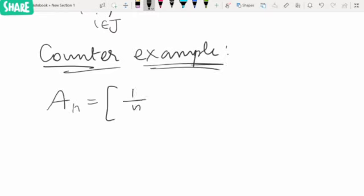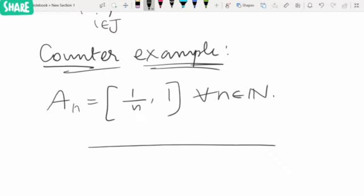Let us see a counterexample for that. Take Aₙ as the closed interval [1/n, 1] for all n in N. For n = 1, this will be the singleton {1}. For n = 2, this will be [1/2, 1]. For n = 3, this will be [1/3, 1]. As we go on, it approaches 0, but